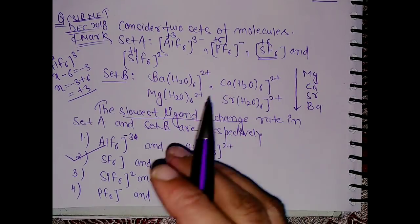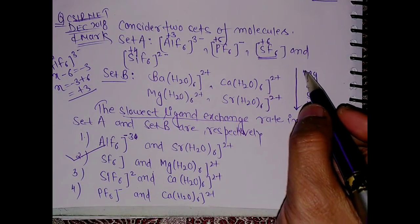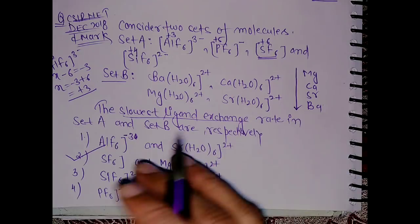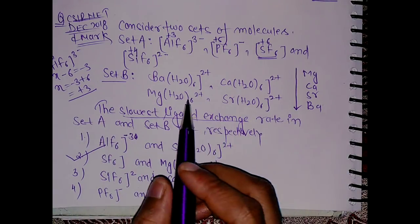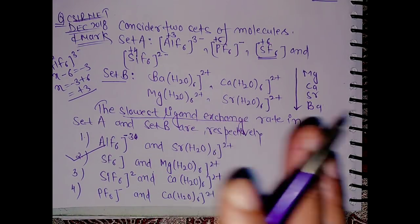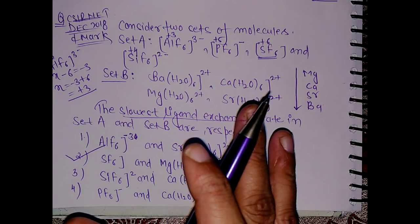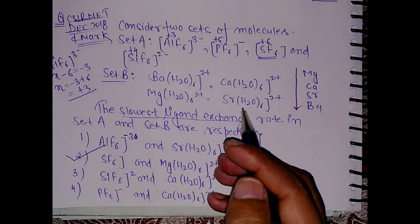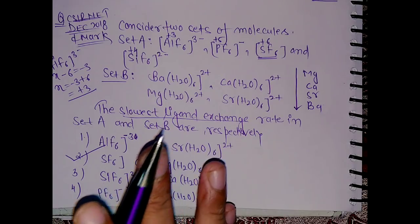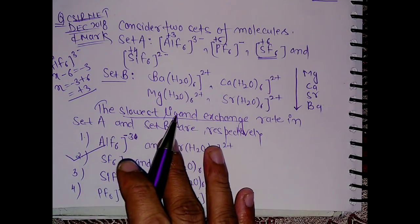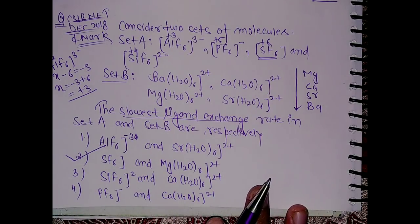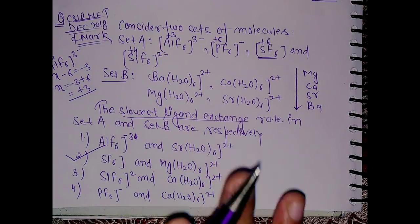So the distance of the ligand from this metal central atom is increasing as we go from top to bottom. So it is very obvious that if the distance between the central atom and the ligand increases, then it will be more prone to the breaking of the ligand and it will easily participate in the ligand exchange mechanism.